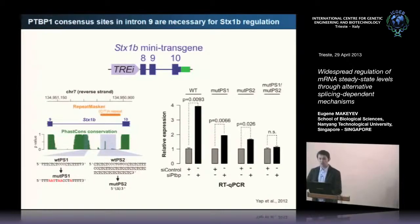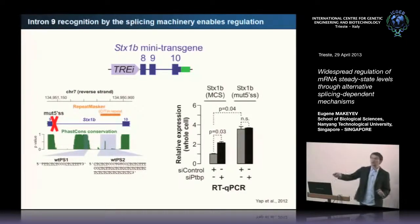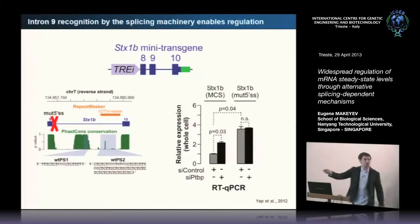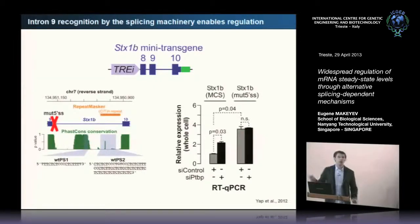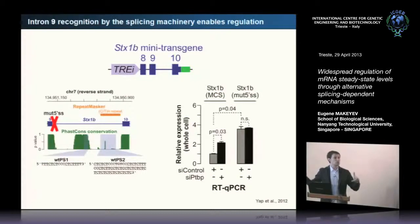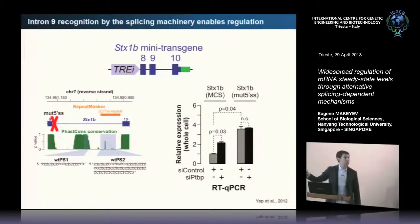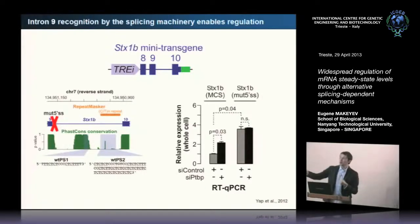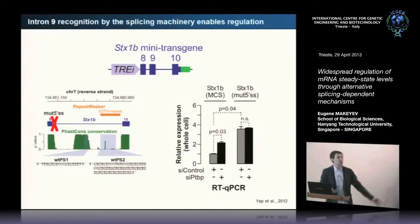The interesting twist is that when you mutate the 5' splice site here rather than the binding sites, the regulation is completely gone as well. This tells you that it's not just the fact of PTB binding there—this entire block has to be recognized as an intron. You need to recognize this element as an intron in order for the regulation to work. It's not a simple model where PTB just binds and retains this thing in the nucleus; it's more likely that PTB binds and disables some steps of splicing, and this is recognized as an aberrant form not allowed to leave the nucleus.